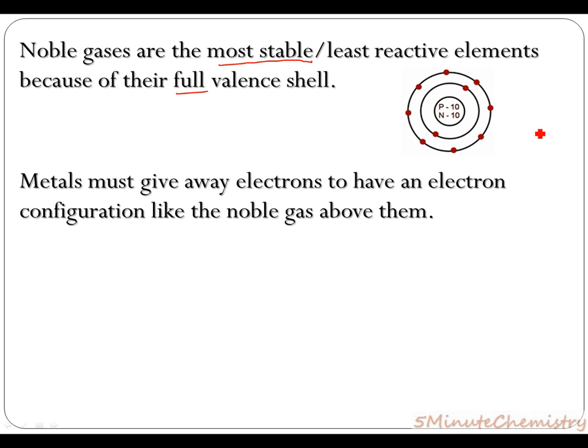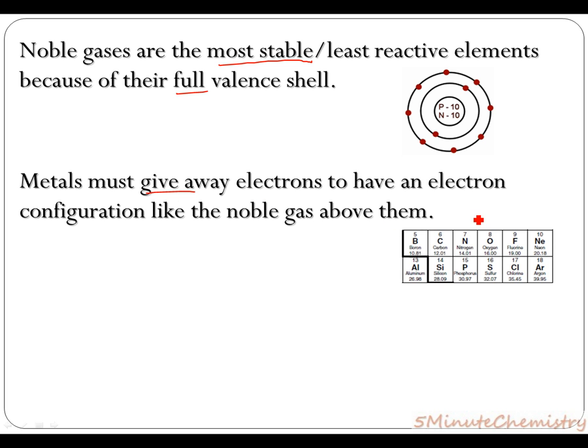Metals on the other hand, they're going to have to give away their electrons in order to have a configuration like the noble gas above them. So if we took aluminum for example, aluminum has three valence electrons. So aluminum's Lewis structure looks like so.